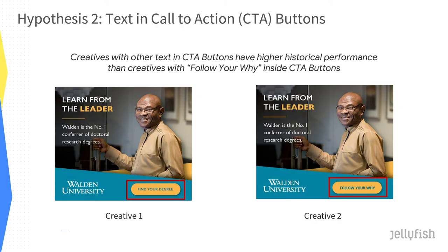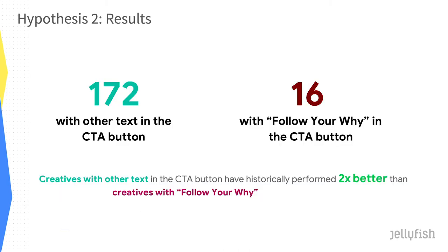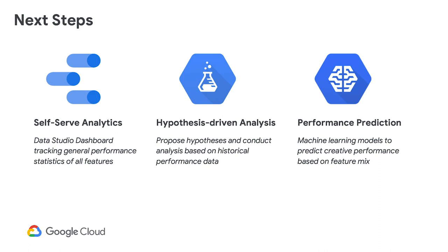Our second hypothesis was that using the call to action 'Follow Your Why' typically had lower performance than using other text. There were 172 creatives with other text and 16 with 'Follow Your Why.' When other text was used, performance was two times better than using 'Follow Your Why.' These are just some examples — there are tons of features available from the Vision API that we can augment by building meta-features on top, such as where the call-to-action buttons are located, the contrast between the button color and background, relative size, and more.